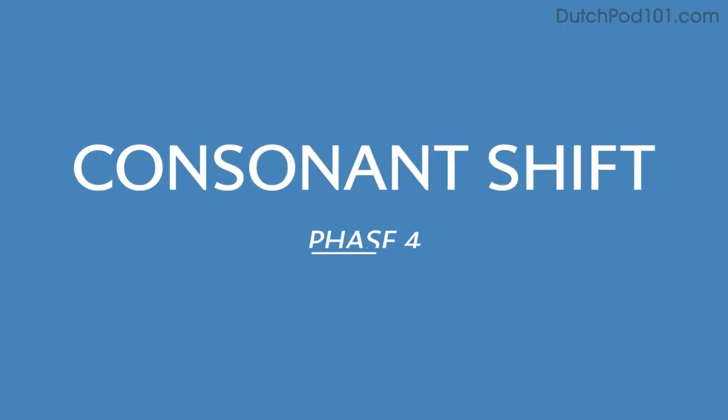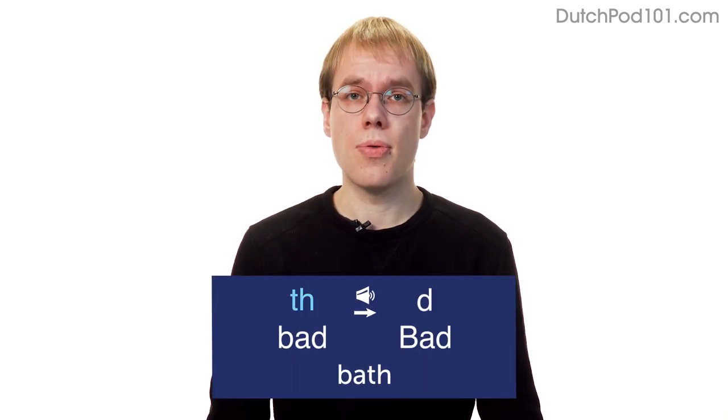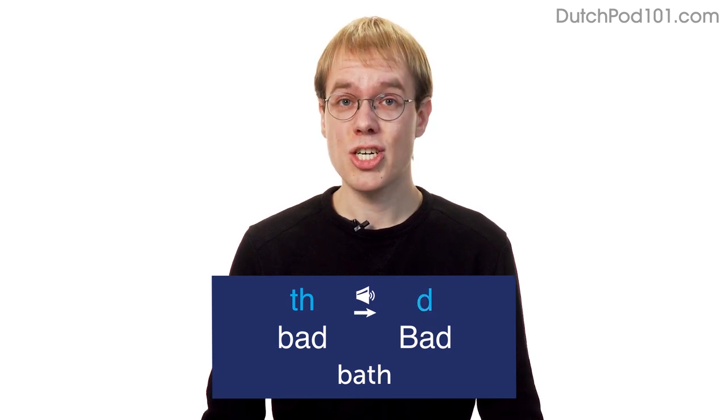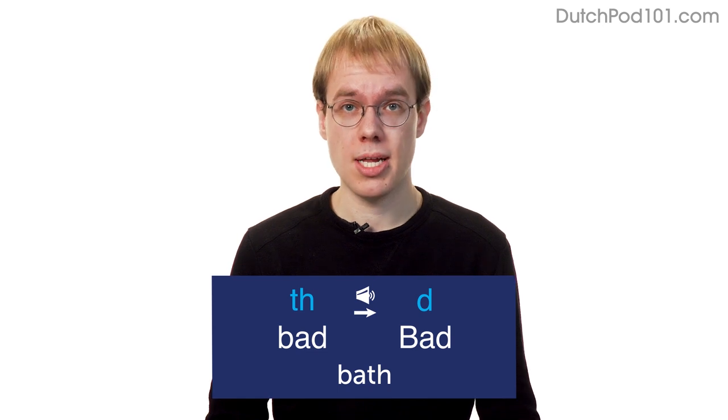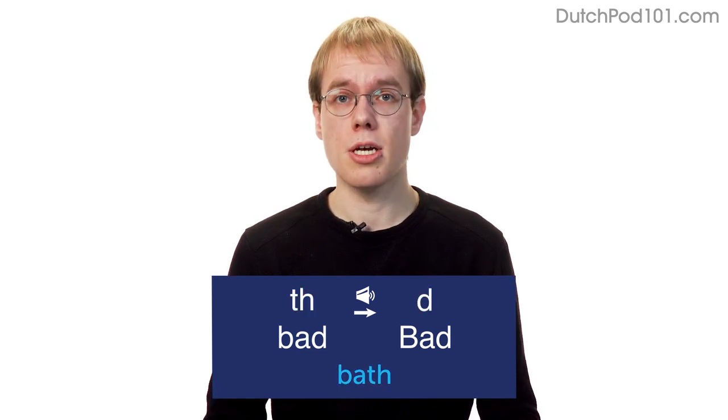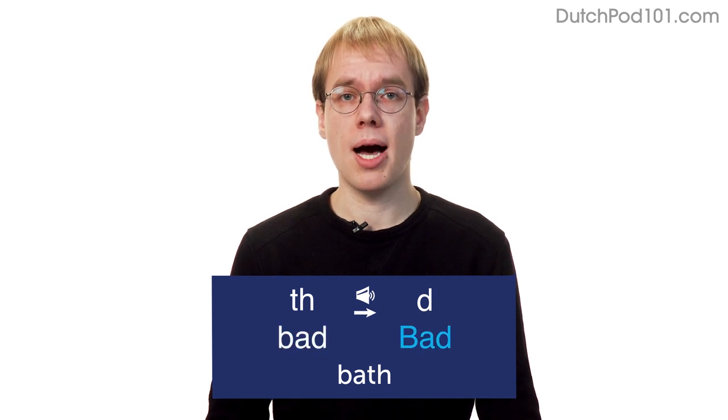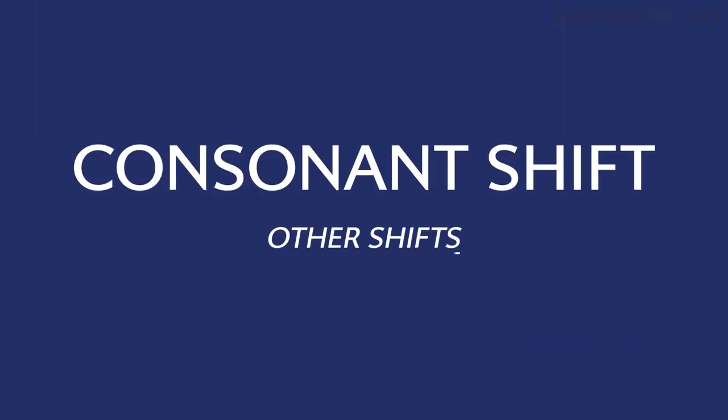Let's keep moving. Whether the fourth phase is officially part of the high German consonant shift is a debate, as one part also affected Low German and Dutch — the opposite of the first three phases which solely affected high German. The three shifts include TH becoming DE. This shift also happens in Dutch and not in English. So 'bad' in Dutch is 'bad' and in German it's 'Bad'.